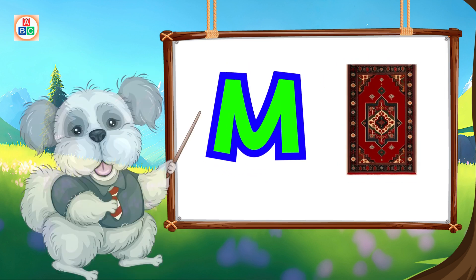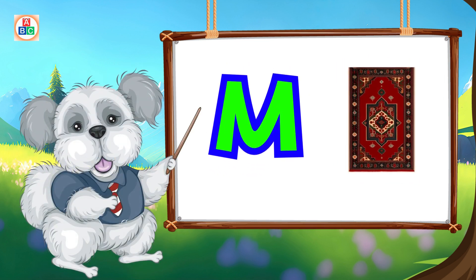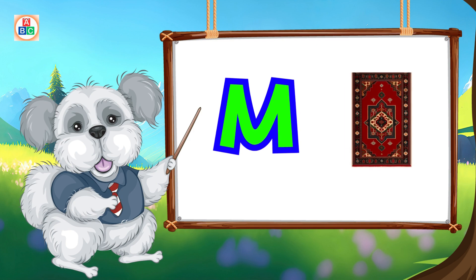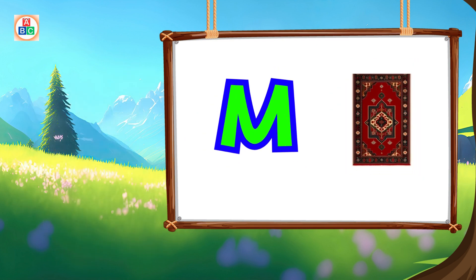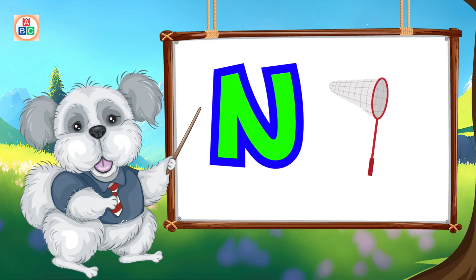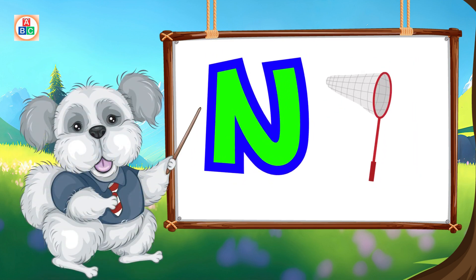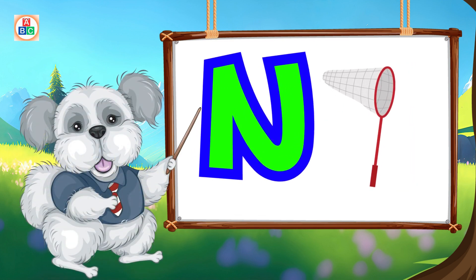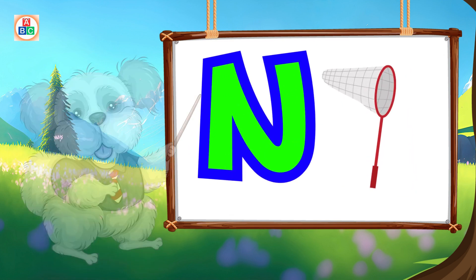M is for mat, m-m-mat. N is for net, n-n-net.